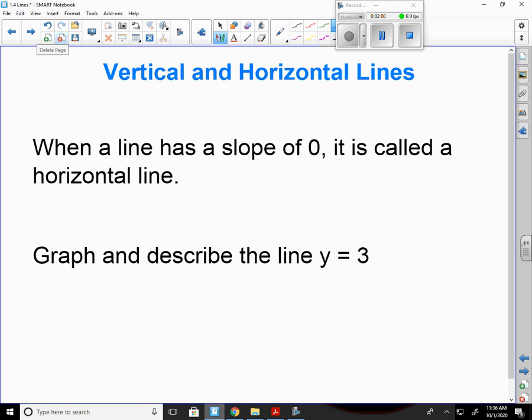So you've done point slope before. You've done slope intercept before. You've also dealt with vertical and horizontal lines. When a line has a slope of 0, it's called horizontal, because the rise means it doesn't go up at all.